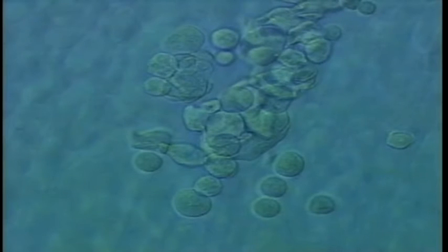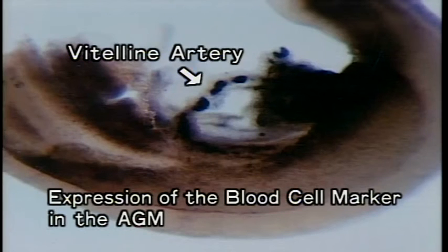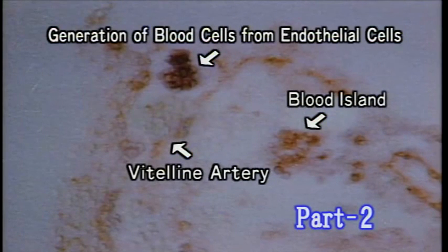What does this mean? Attention is being given to this new way of understanding hematopoiesis in the AGM. From this photograph, we surmised that blood cells are also being generated in the vascular endothelium of the AGM. After purifying the vascular endothelium and carrying out a further experiment, we were able to prove that blood cells are being generated from the endothelial cells in the blood vessels.